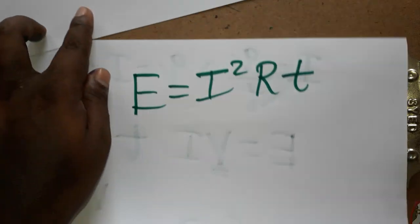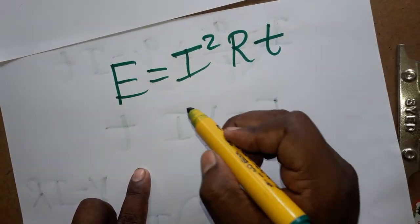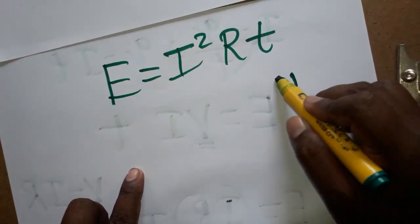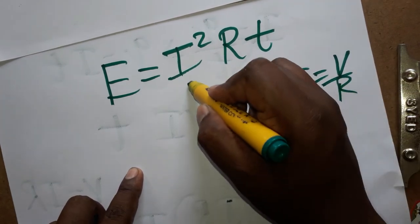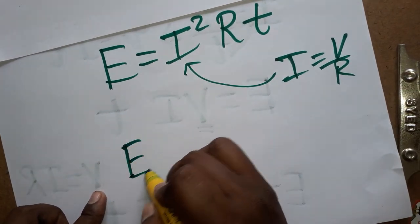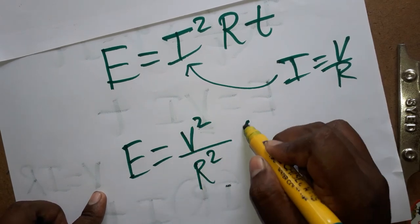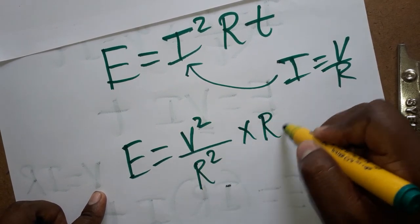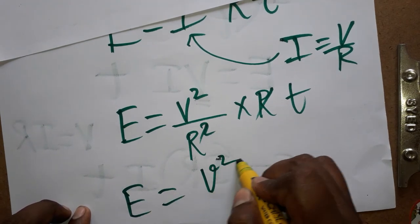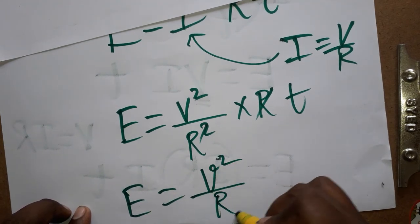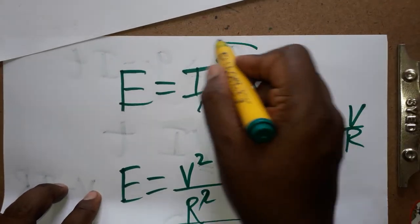Energy equals I squared R T — that is Joule's Law of Heating. Further, you can derive: since I equals V by R according to Ohm's Law, substituting instead of I gives energy equal to V squared divided by R squared, into R, into T. The R's cancel, so energy is equal to V squared divided by R, into T.